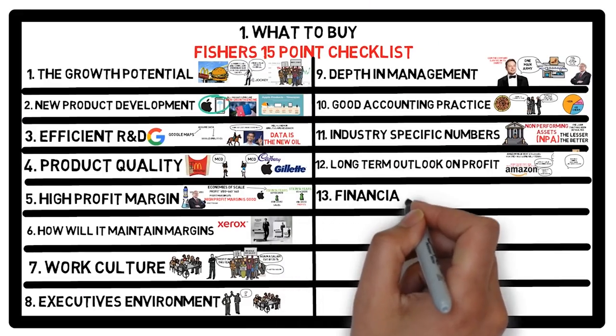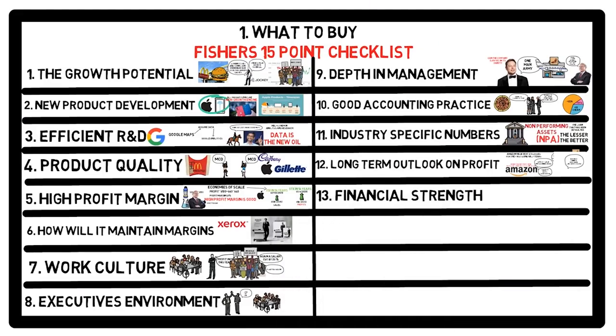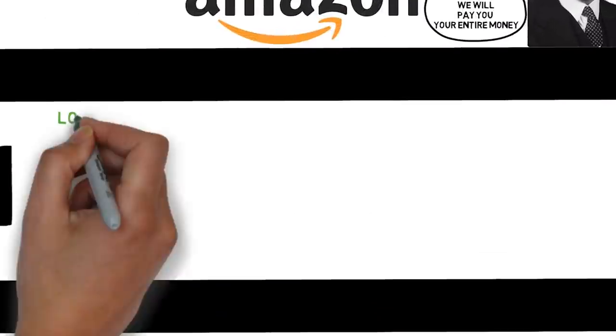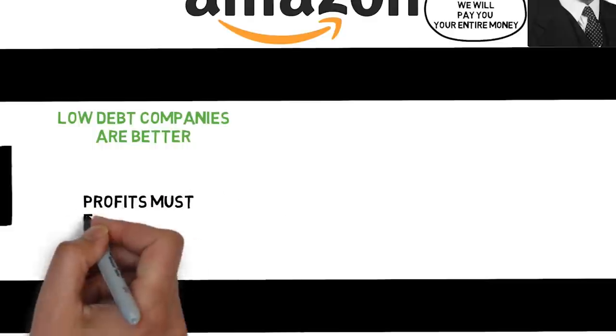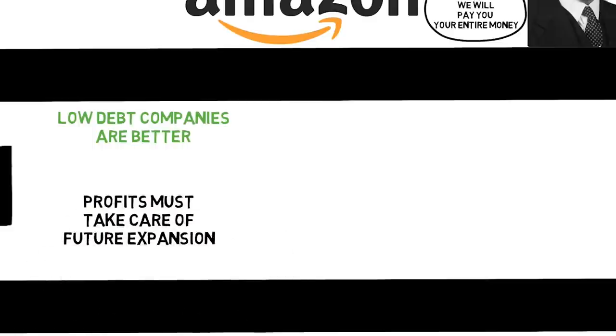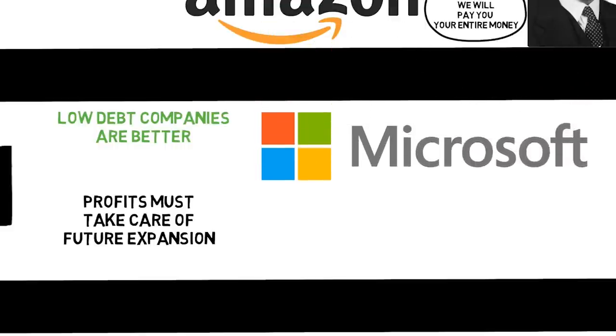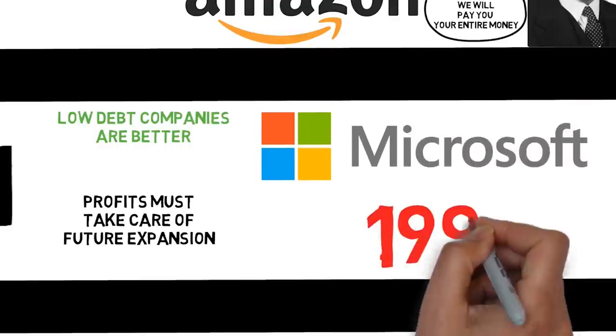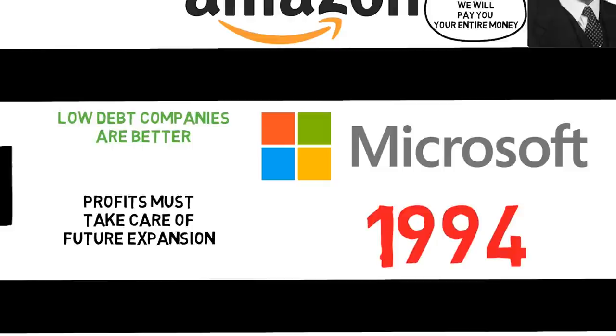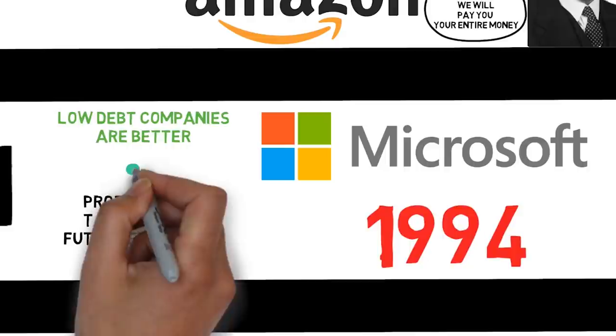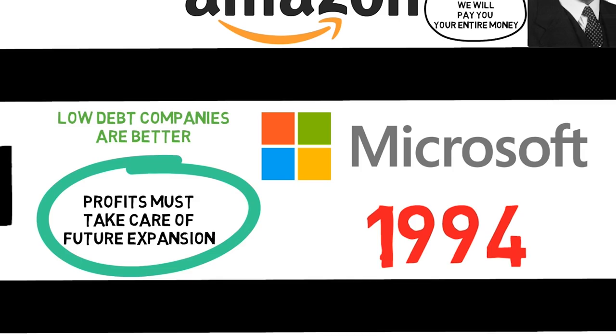Number 13: Financial strength. Phil is a great advocate of not investing in companies which are overburdened with debt. What is better is the company with negligible debt and a business where its profits can take care of its further expansion without raising any money from outside. Microsoft, after initial investment of 1994, has actually never raised a single dollar to grow their own business. All these years, it has been growing on the past year's profit. That must be the company you must desire to invest in.